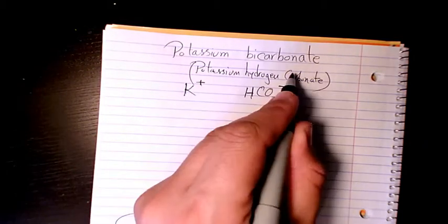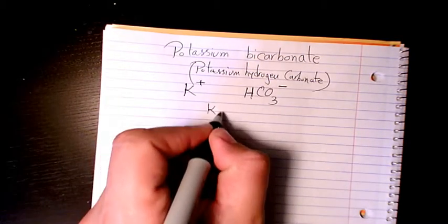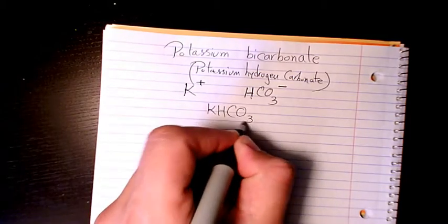So potassium bicarbonate or potassium hydrogen carbonate is going to be KHCO3.